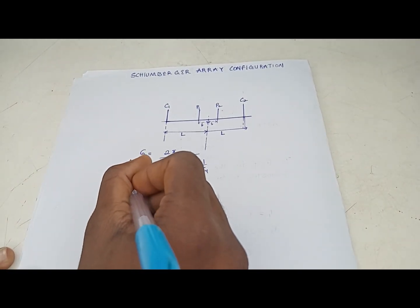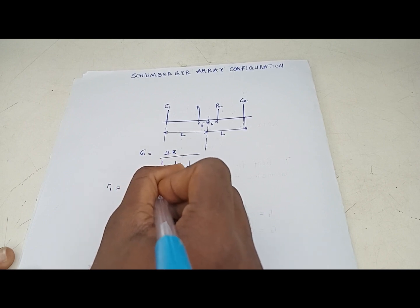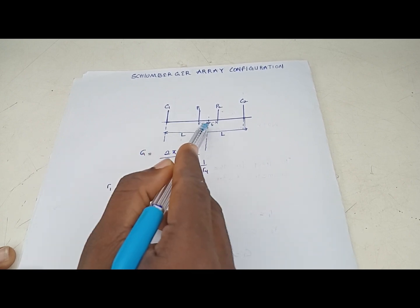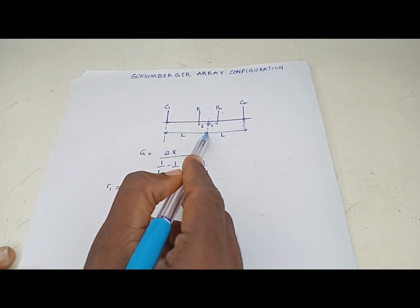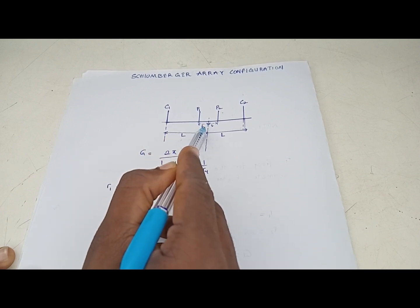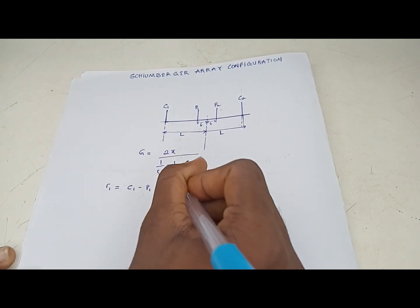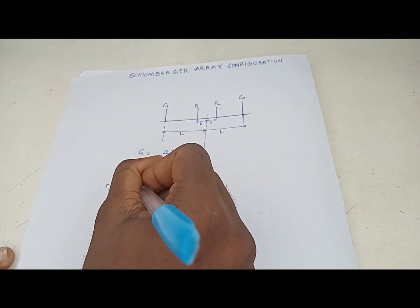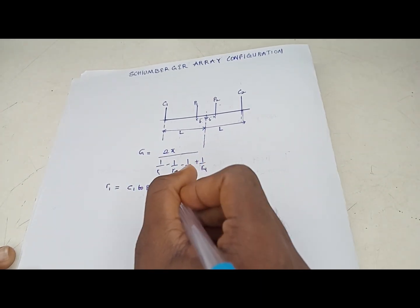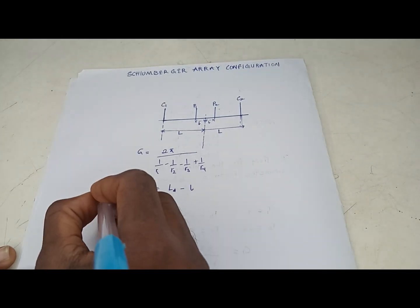For r1, which is the distance from C1 to P1: C1 to the midpoint is capital L, and the midpoint to P1 is small l, so C1 to P1 equals capital L minus small l. Therefore r1 = L - l.